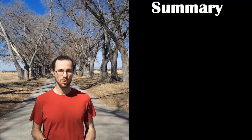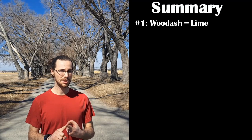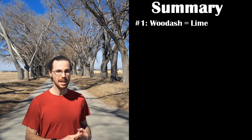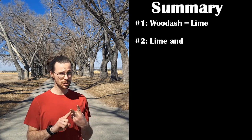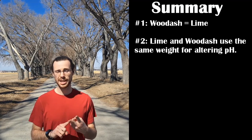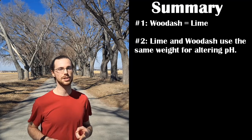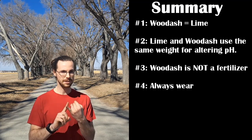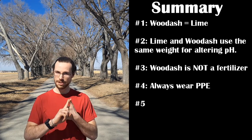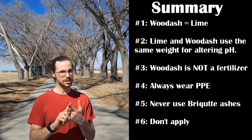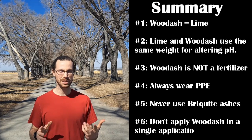This is a pretty dense video, so let me quickly sum it all up. Wood ash is used as a lime substitute to raise soil pH, making it less acidic and more alkaline. If you need to correct your soil pH with lime, you can swap it pound for pound with wood ash to be a little more self-sufficient. Never use wood ash as a fertilizer. Always wear protective equipment while using it. Never use coal or briquette ashes. And make sure to slowly apply it so you don't burn your plants for a season.